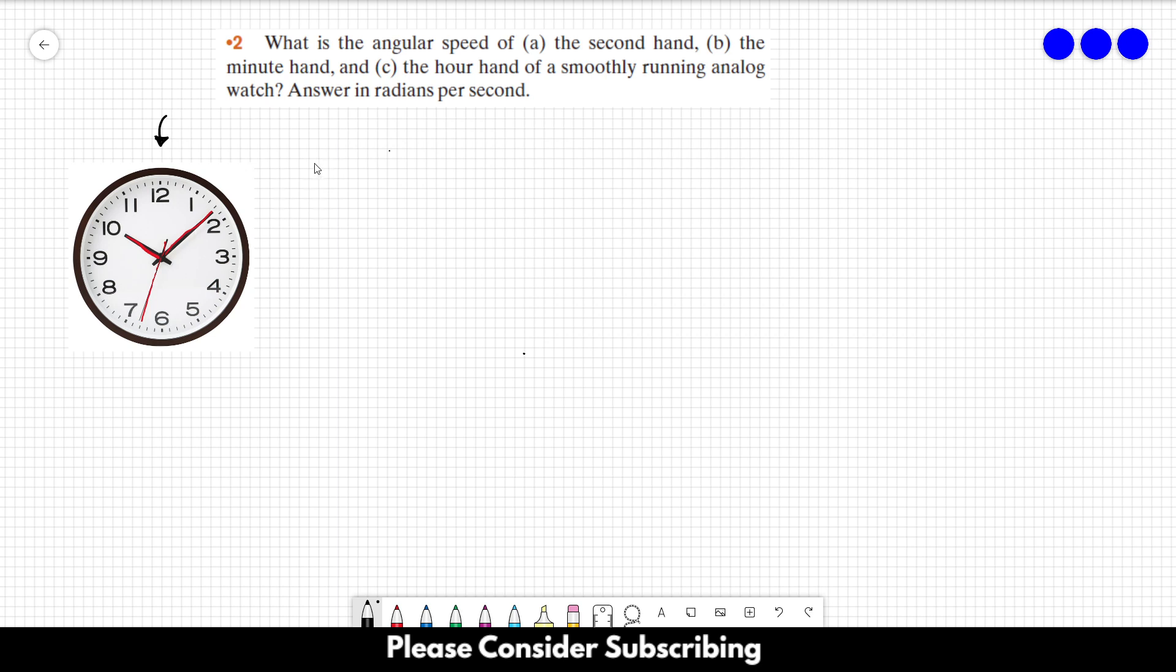There are only two things you must know to solve this problem. The first is the relation between angular position and angular speed. This is the equation we're going to use. The angular speed is equal to the angular position divided by some time t.